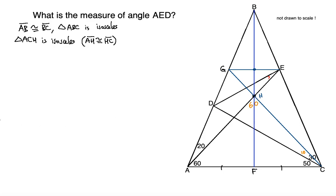So this is equilateral — we'll update that definition. Now notice that by definition, angle AHC and angle GHE are vertical angles, and vertical angles must be congruent. So angle GHE has to be 60 degrees.